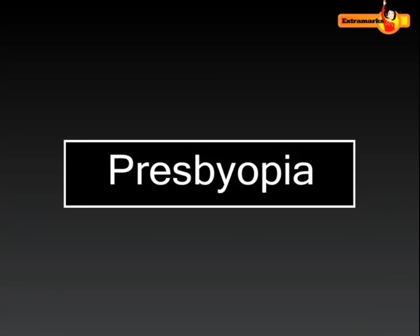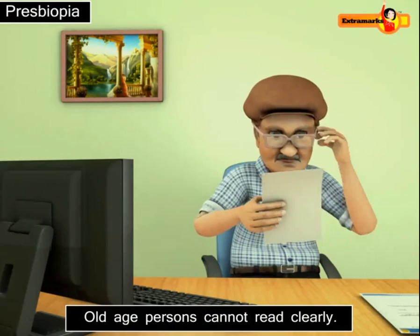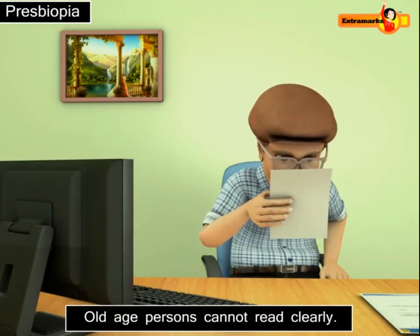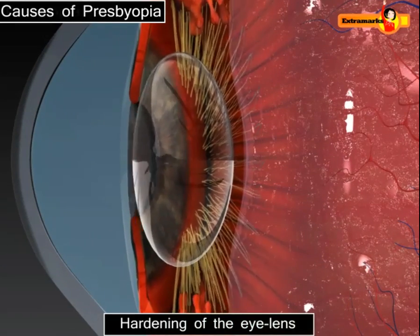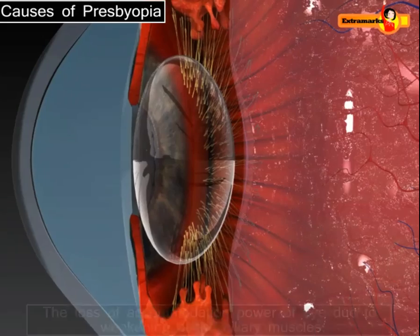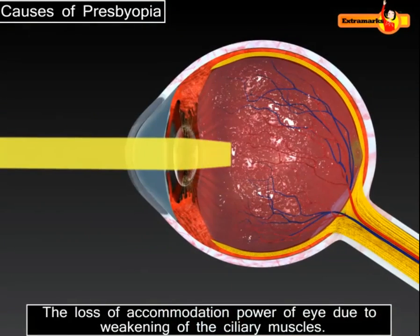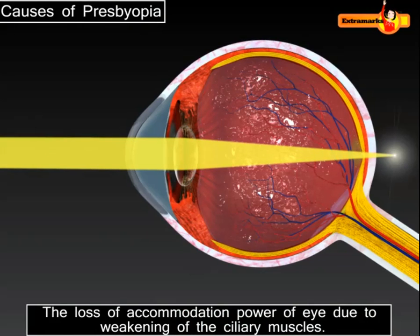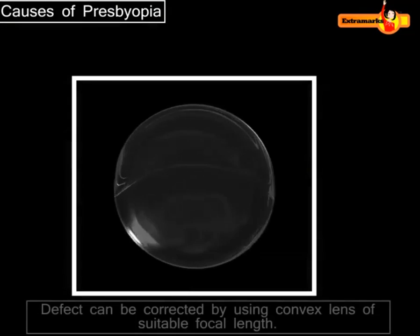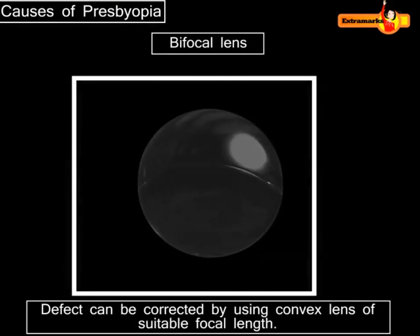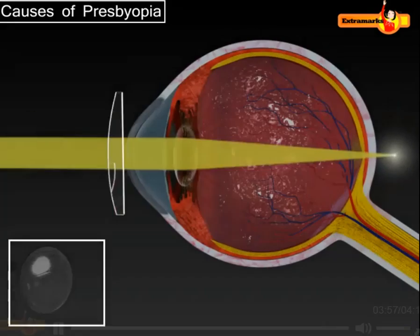Presbyopia is an optical defect which arises with advancing age. With aging, the natural lens of the eye becomes harder and less elastic, thus the ability of accommodation of the eye gradually decreases and the person cannot see near print and objects clearly. This defect is rectified by using bifocal lenses, and then the person can see clearly at all distances.